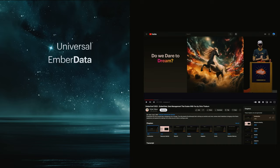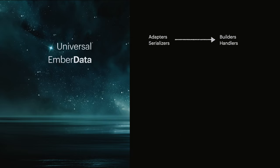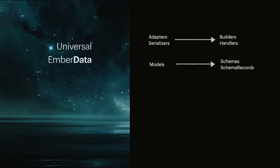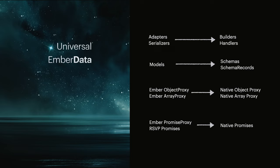Last year, we presented the new foundation for Ember data we've been building to help us reach for the stars, recentering the library around request management, embracing the platform, and providing greater flexibility and broader utility. Adapters and serializers became builders and handlers that decorate the platform fetch API. Models became schemas and now in Canary, schema record. Ember's legacy proxies have been removed in favor of native proxies, meaning that arrays are now just arrays instead of custom array-like interfaces to separately learn. Promise proxies and RSVP proxies are now just native promises. We chose to slow the rate of releases to allow us to craft the best possible bridge from version 4.12 to version 5. For each change, we've worked to build a robust migration path with multiple paths for incremental adoption and code mods where possible.